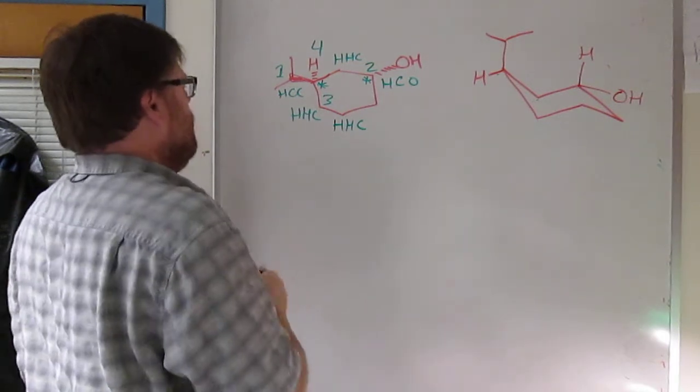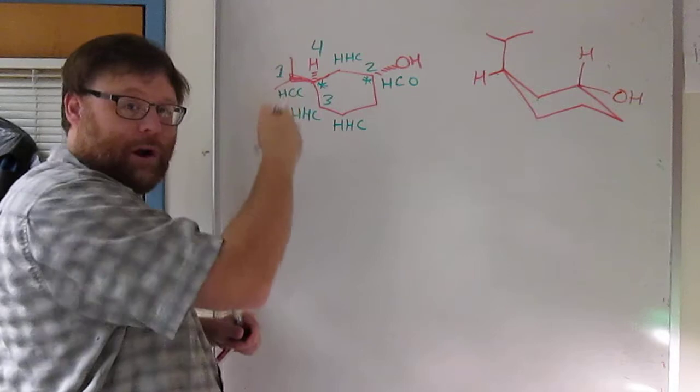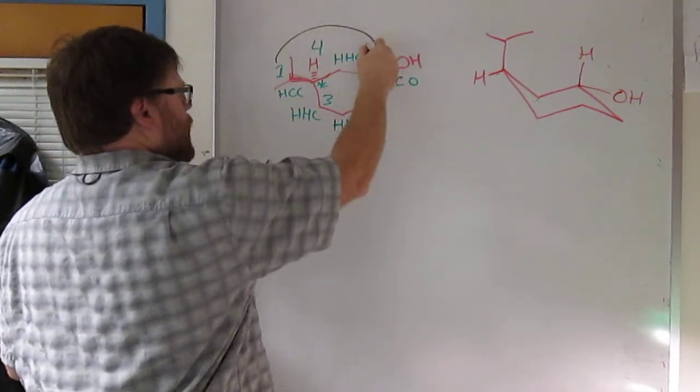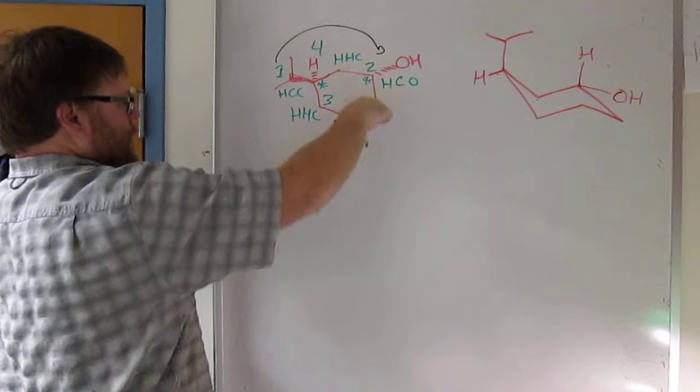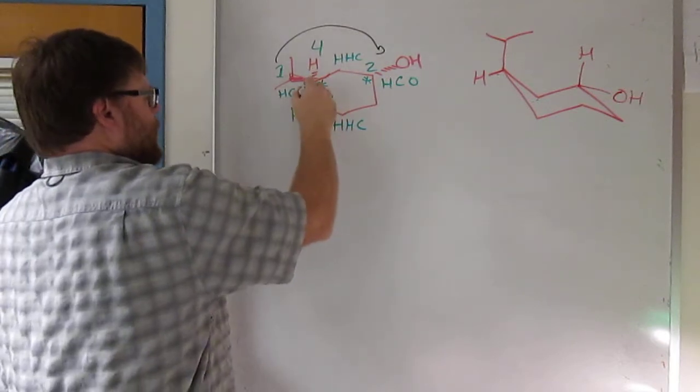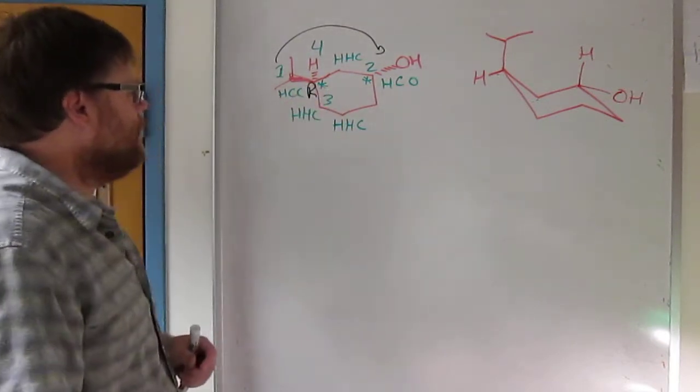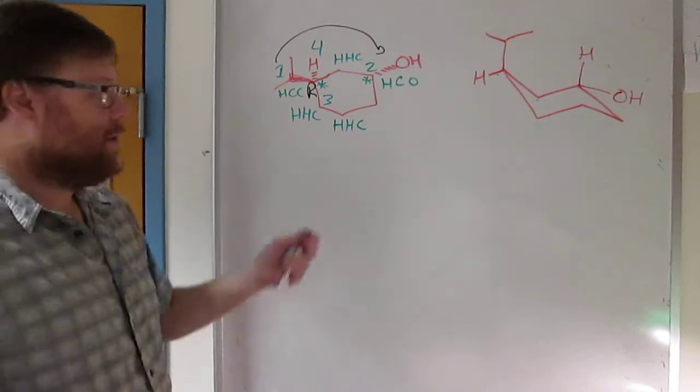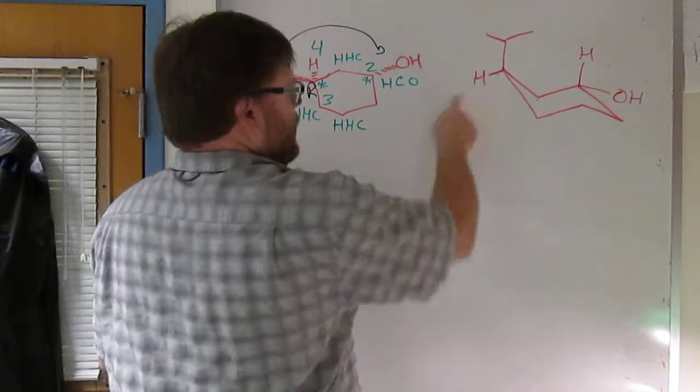So with that H away, the priority group four is away. You can just draw your circle. One to two to three. That's a clockwise circle. So this chiral center is R. Let's go over to the chair.